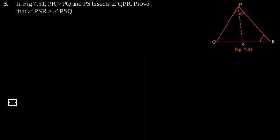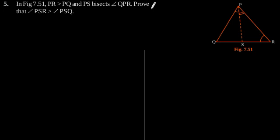Exercise 7.4, question number five. In figure 7.51, PR is greater than PQ and PS bisects angle QPR. Prove that angle PSR is greater than angle PSQ.